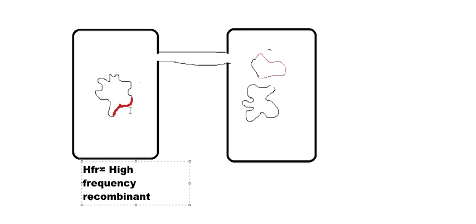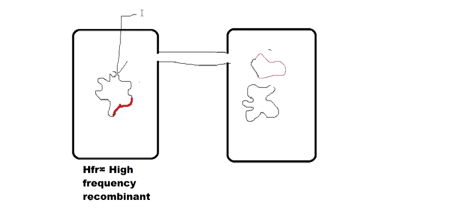This type of bacteria, when it has combined its plasmid with the main genetic material, we call it HFR bacteria, and this genetic material we call it an epizome. So what is an epizome? It is the main bacterial genetic material combined with the plasmid. During the process of conjugation, this has replicated — let's say from here — and the replication stopped over here, and then it transferred the whole thing.